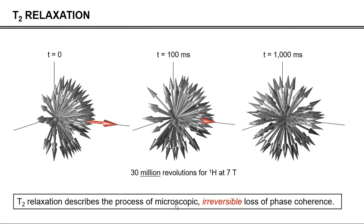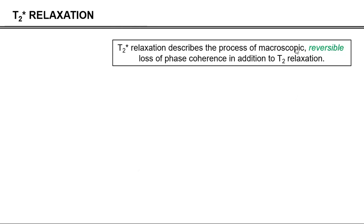Now, under many experimental conditions, signal disappears much faster from the transverse plane than by T2 relaxation alone. And that is because there are other processes — macroscopic processes — that lead to additional loss of phase coherence. And that collection of additional processes is referred to as T2 star relaxation. They are typically based on macroscopic effects, and they can be reversed. This will be the subject of a future video.